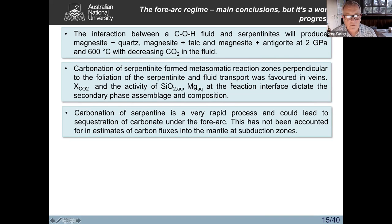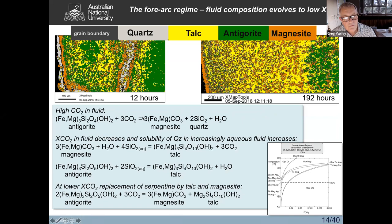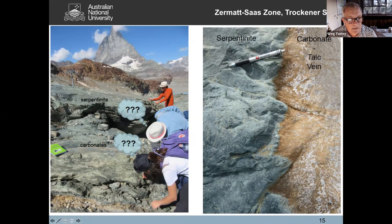The carbonation of the serpentine forms metasomatic reaction zones perpendicular to the foliation. Fluid transport was favoured in veins, and porosity was created allowing percolation and reaction. Importantly, it seems to be a very rapid process. We speculated this could result in sequestration of quite a lot of carbonate in that forearc cold nose underneath mantle wedges — an unrecognized reservoir for carbon not yet accounted for in estimates of carbon fluxes into the mantle at subduction zones. We do see evidence for this in nature: talc plus carbonate magnesite veins alongside serpentinite in the Zermatt-Saas region in Switzerland, mimicking what we observed in the experimental studies.